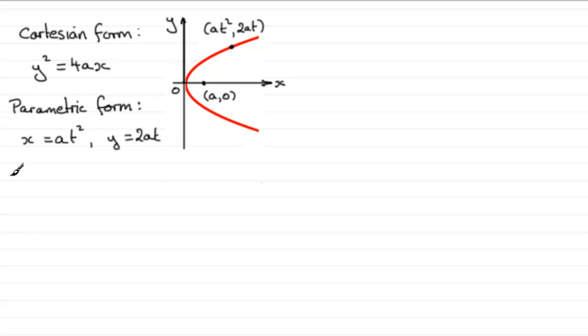I know it's the parametric form because if I look at y squared, y squared would equal (2at) all squared. If I square this out I end up with 4a²t². And if I look at the right hand side of the equation, 4ax is going to equal 4a multiplied by what x is, which is at squared.